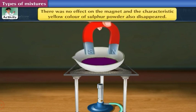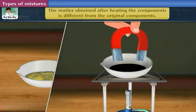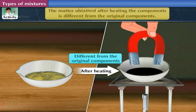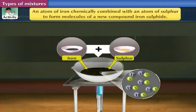The characteristic yellow color of sulfur powder also disappeared. This shows that the matter obtained after heating the components is different from the original components. When iron and sulfur were heated, an atom of iron chemically combined with an atom of sulfur to form molecules of a new compound, iron sulfide.